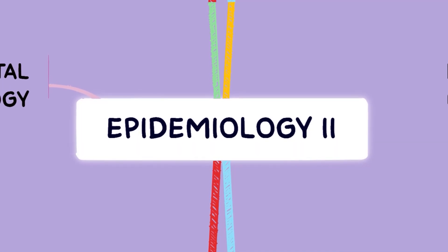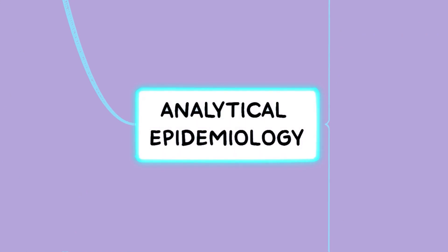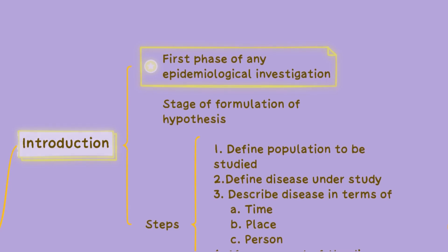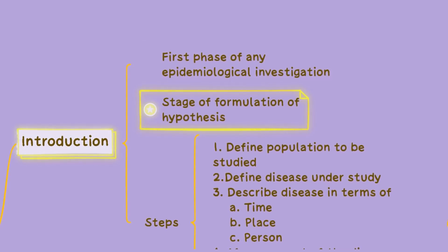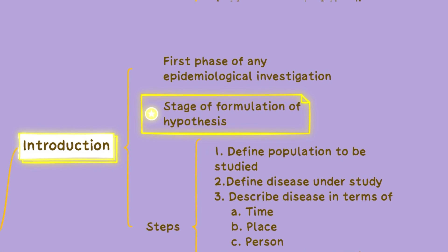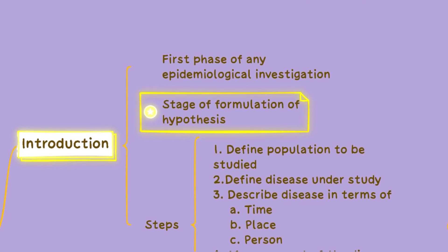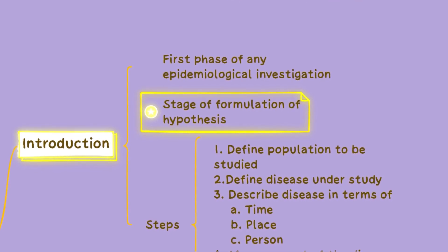There are three main types of epidemiology: descriptive, analytical, and experimental. Descriptive epidemiology is the initial phase of any epidemiological investigation and plays a crucial role in formulating hypotheses about a disease. It involves a systematic approach to studying and understanding the characteristics of a disease within a population.